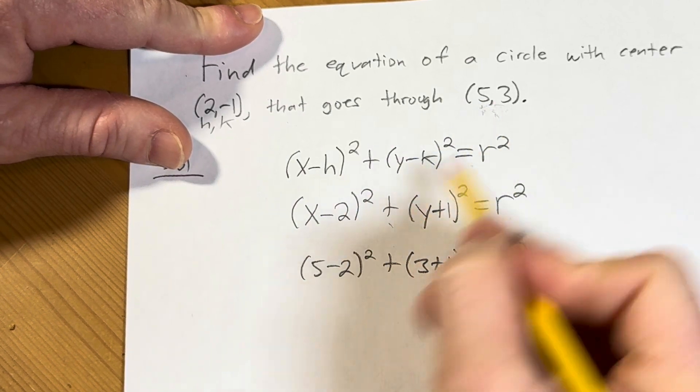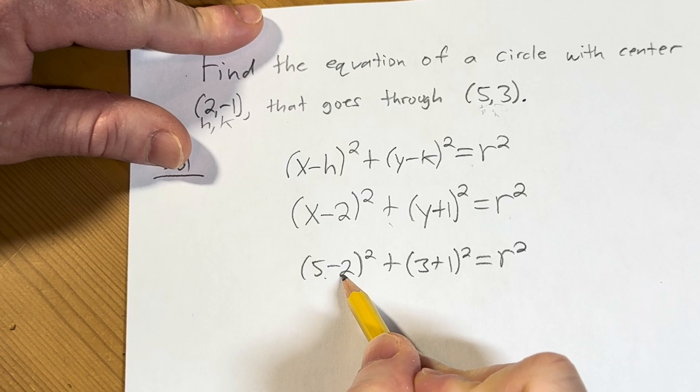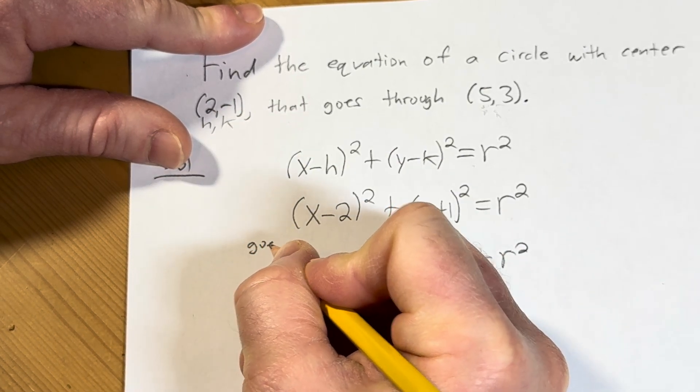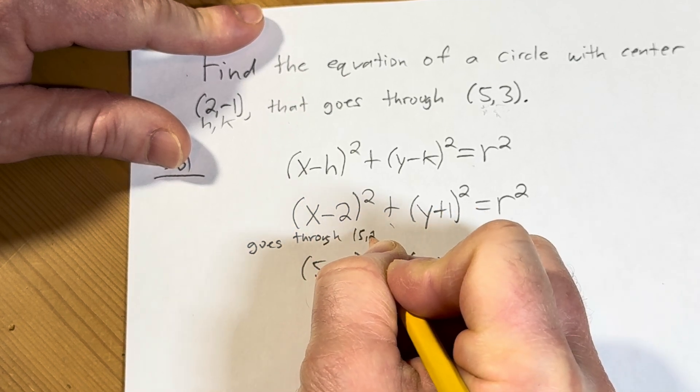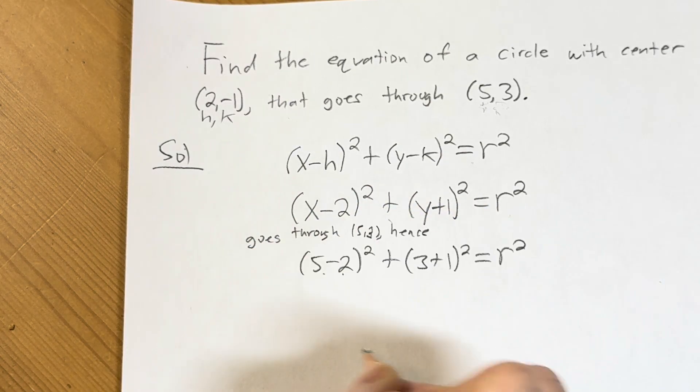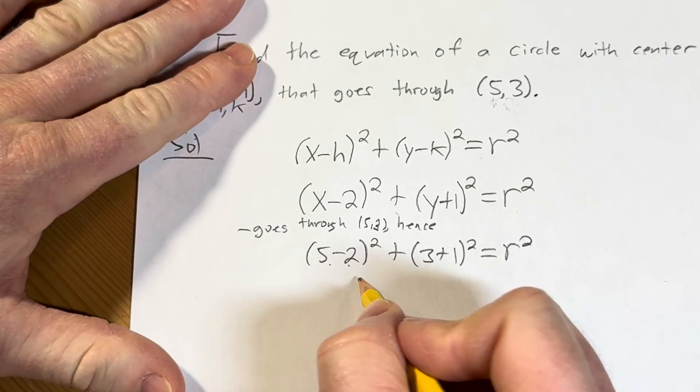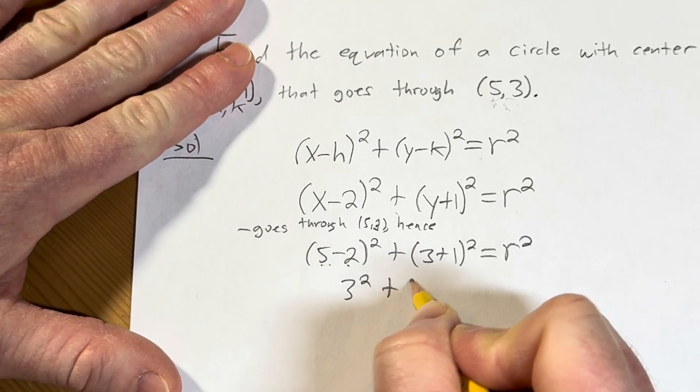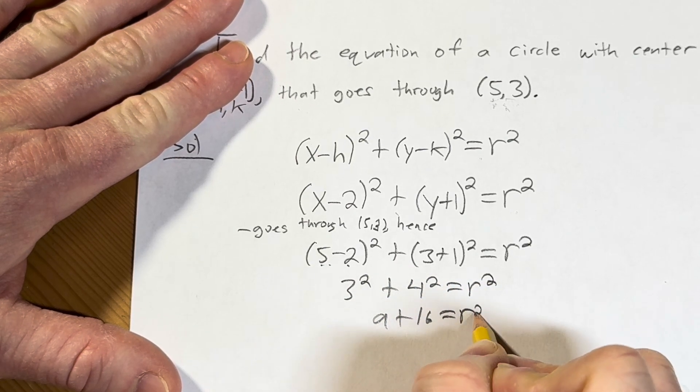Again, what we've done here is we've taken the 5 and the 3, we've plugged it in for x and y. 5 minus 2 quantity squared—you know, let me just say here, just goes through—goes through 5 comma 3. Hence, just to add a little bit of clarity here, what's going on. 5 minus 2 is 3, so we get 3 squared, which is 9. This is 9 plus 16 equals r².